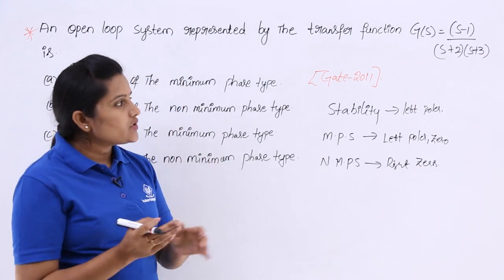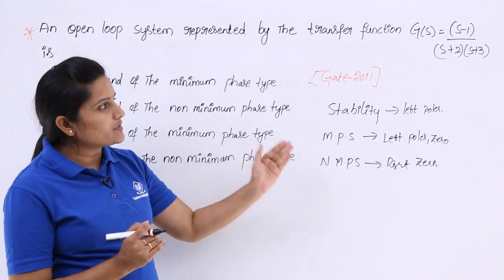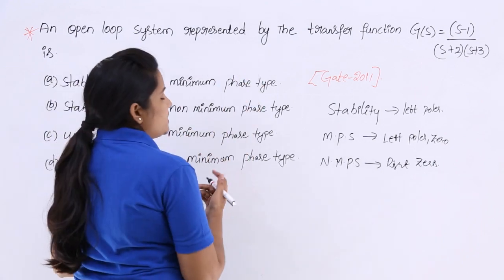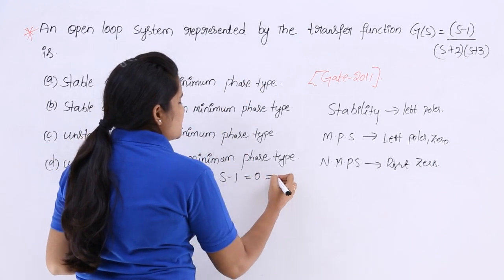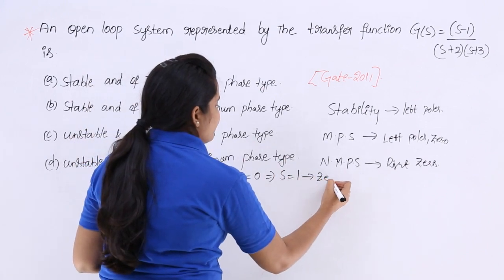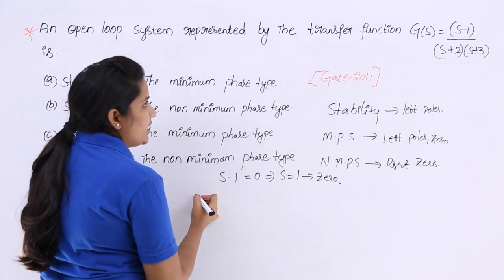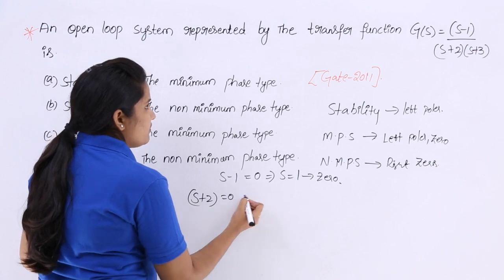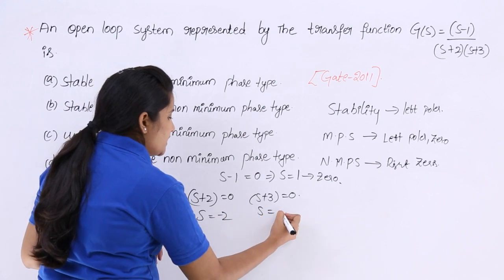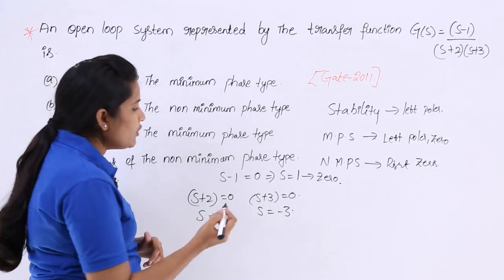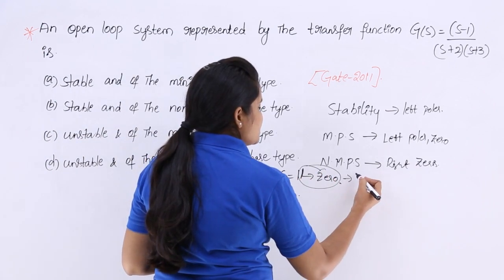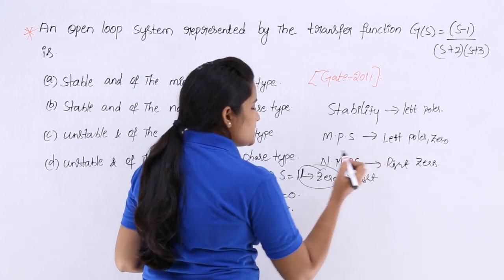Coming to our question: G(s) = (s - 1) / ((s + 2)(s + 3)). How do we get zeros? By equating the numerator to zero — we get s = 1 as the zero. Coming to poles, by equating the denominator to zero: s + 2 = 0 gives s = -2, and s + 3 = 0 gives s = -3. If you observe this zero, s = 1 is a right-half zero.